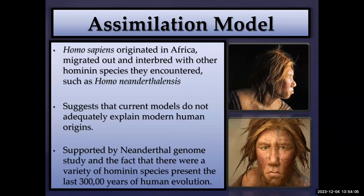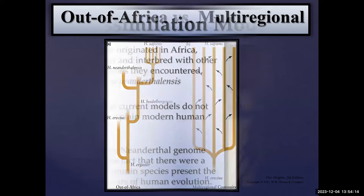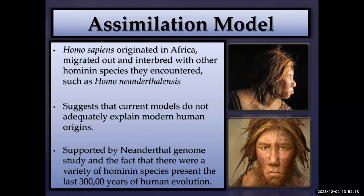The Assimilation Model is a bit of a compromise between the two classic models. It still supports that modern Homo sapiens originated in Africa, but once they migrated out, they interbred with other hominin species they encountered — such as Neanderthals, Homo floresiensis, Homo naledi, or Homo heidelbergensis — rather than completely replacing every species. This model is supported by the Neanderthal Genome Study and acknowledges that the Out of Africa and Multi-Regional models do not fully adequately explain modern human origins given the variety of hominin species present in the last 300,000 years.